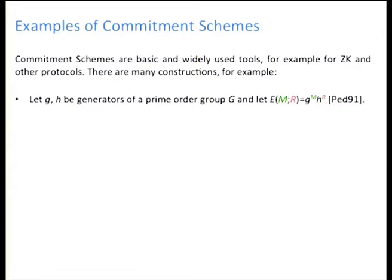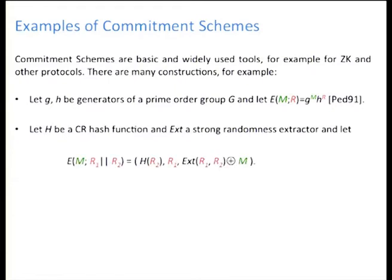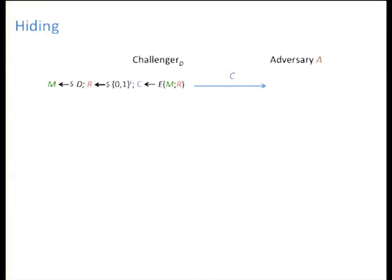The first one is the Pedersen commitment. A prime order group and some generators G and H are public, and the commitment corresponding to some message M and some coins R is given by G to the power M times H to the power R. One can also use a collision-resistant hash function and a Merkle structure to obtain a commitment scheme. Our result will say that both these schemes are not selective open secure.